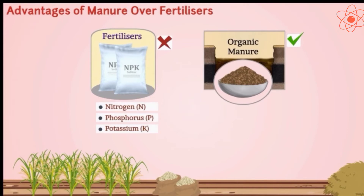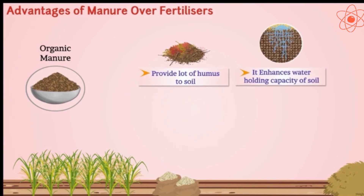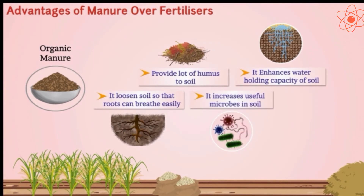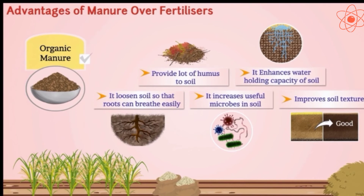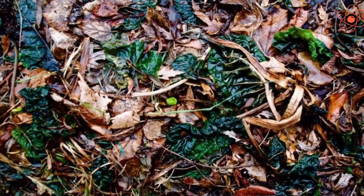Now let us understand the advantages of manure over fertilizers. First, it adds humus to the soil. Second, it enhances the water holding capacity of the soil. Third, it makes the soil porous which makes exchange of gases easy. Fourth, it increases the number of soil-friendly microbes. Fifth, it improves the texture of the soil.